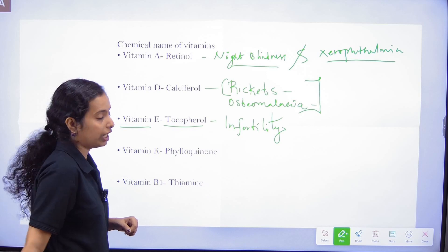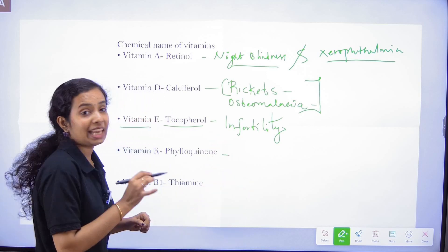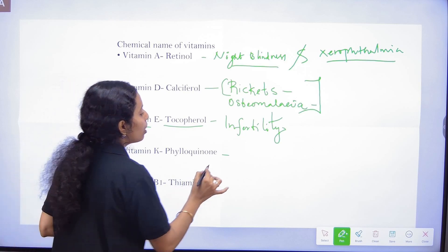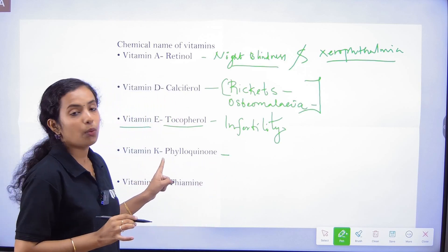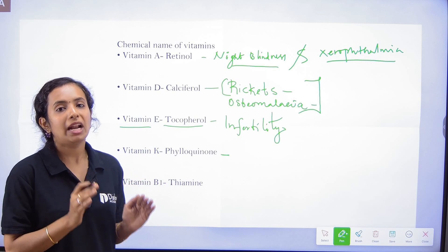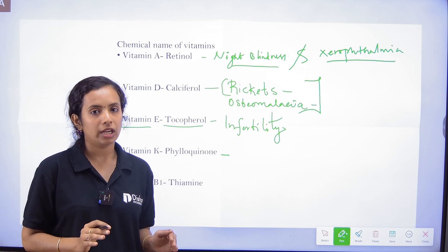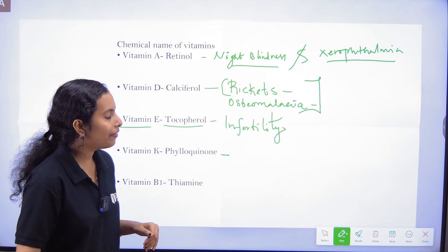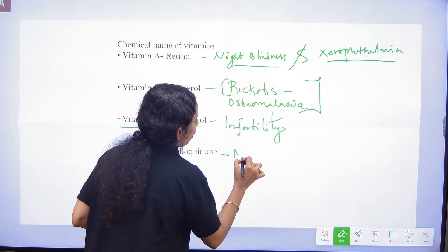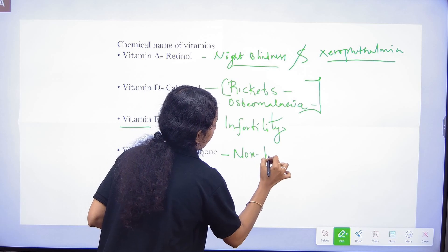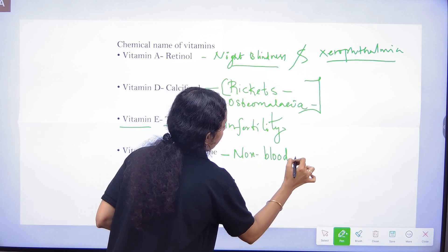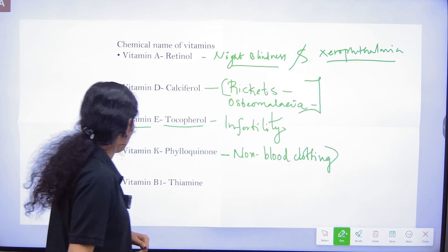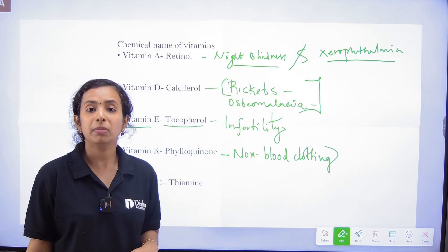Vitamin K's chemical name is Phylloquinone. Vitamin K is used in blood coagulation — blood clotting. Vitamin K deficiency causes Non-blood clotting, meaning the blood does not clot properly.